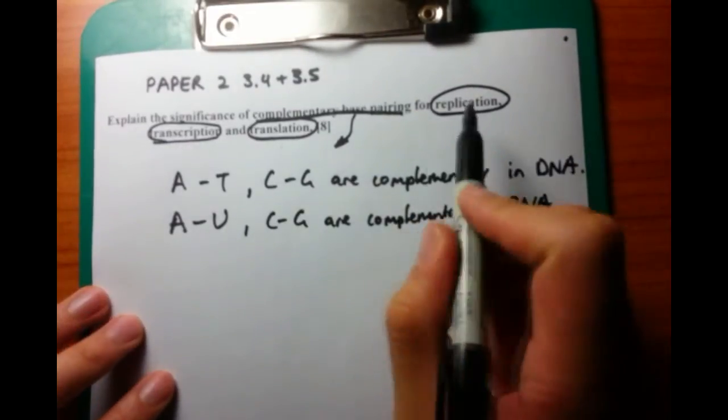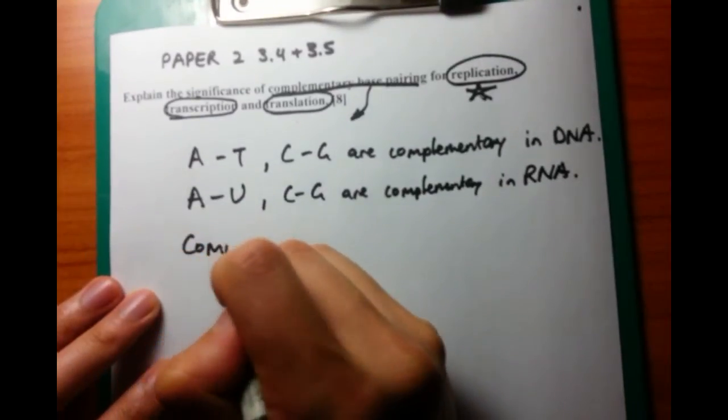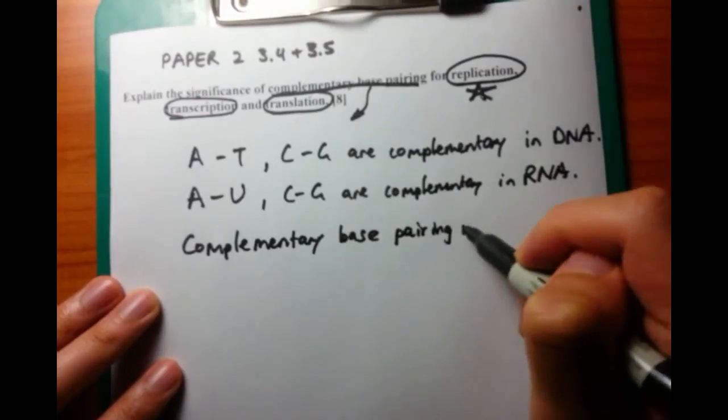So you need to talk about the different nitrogenous bases and how they pair in both DNA and RNA. The key difference here is that A goes to T in DNA, and A goes to U in RNA.